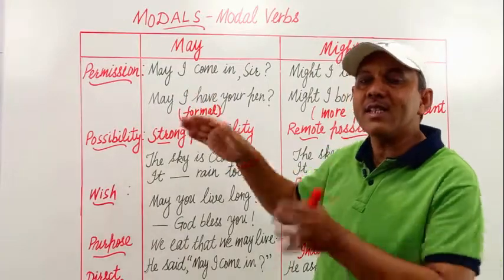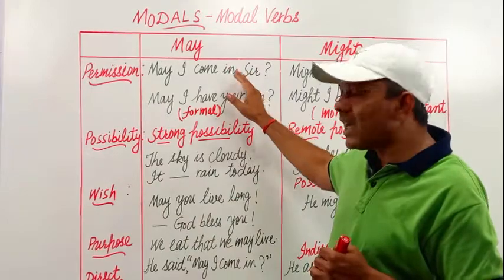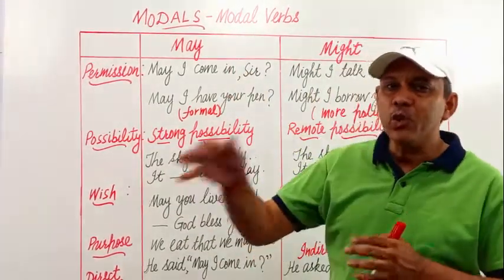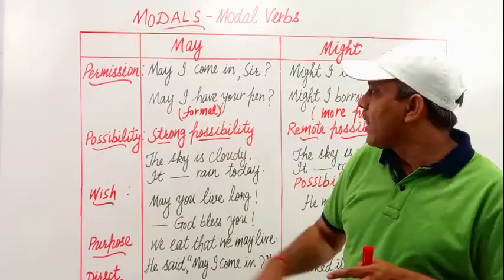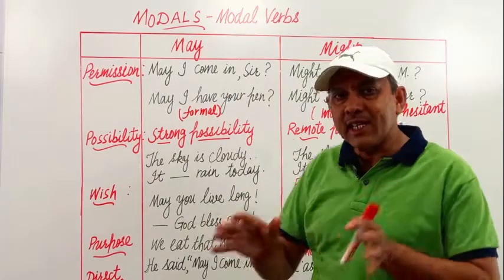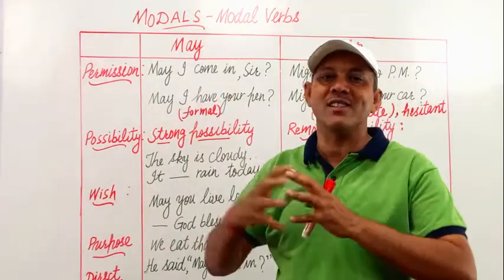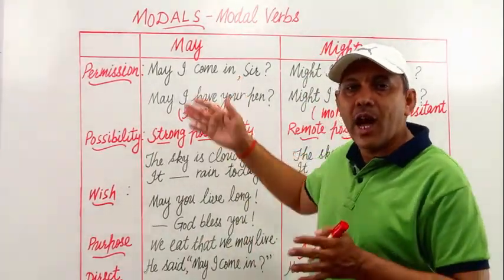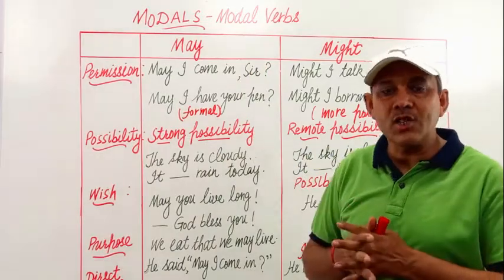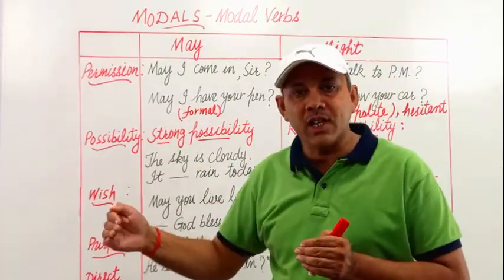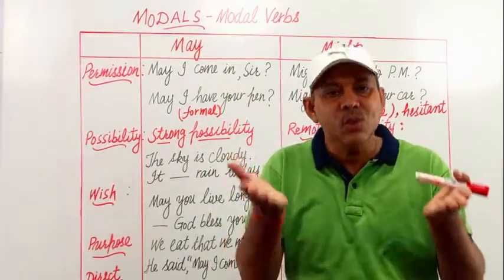If we are in an office and our boss is sitting inside and we ask him for permission, then we use 'may' instead of 'can' or 'might.' This sentence is frequently used by students from KG to higher classes. Every student when asking for permission says 'May I come in, sir?' or 'May I come in, ma'am?' This is the use of the modal verb — very simple.